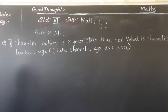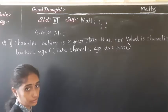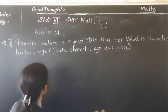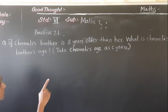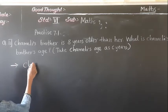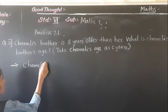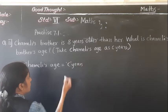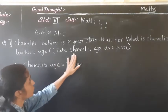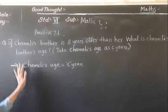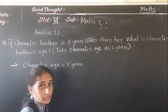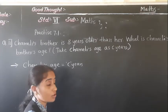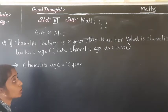Question number 11. Chamele's brother is 8 years older than her. What is given? Chamele's age is taken as C years. Chamele's brother is 8 years older than her.